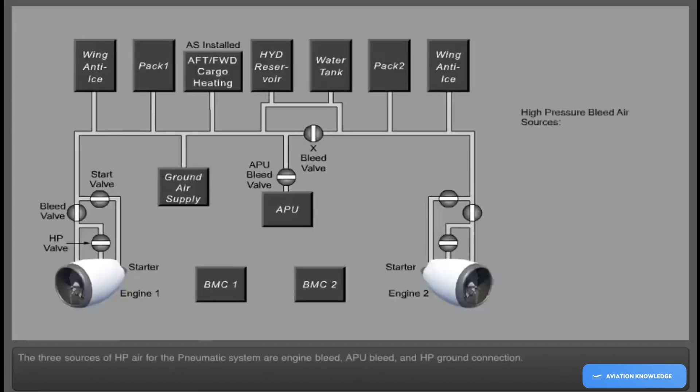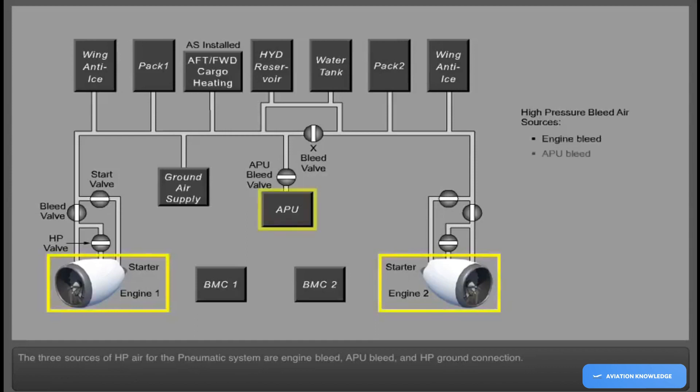The three sources of high-pressure air for the Pneumatic System are engine bleed, APU bleed, and high-pressure ground connection.